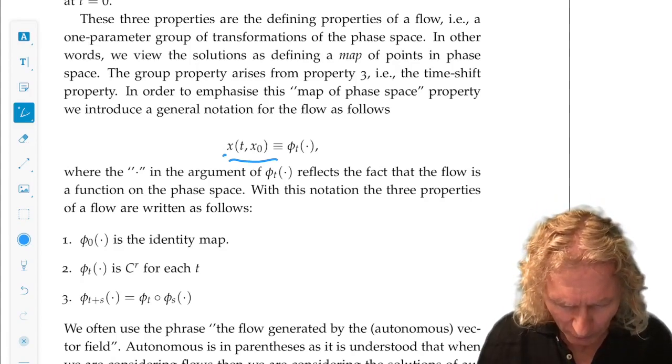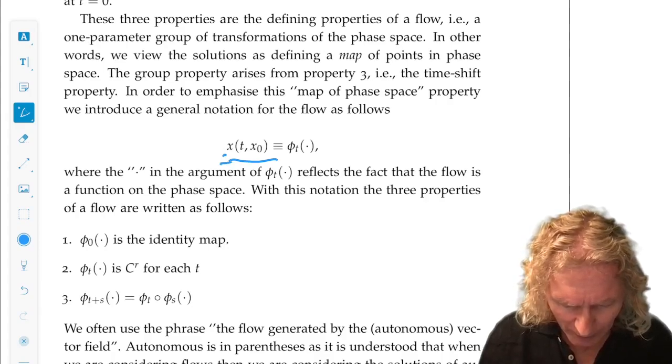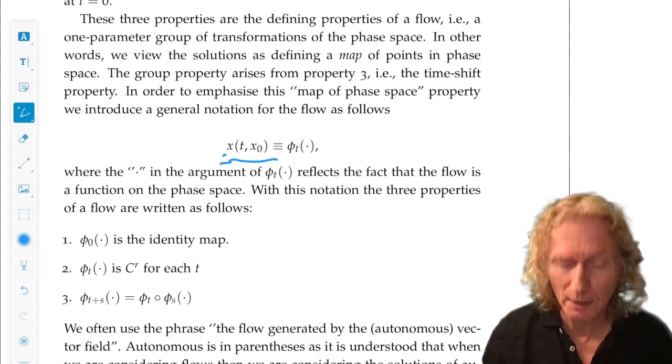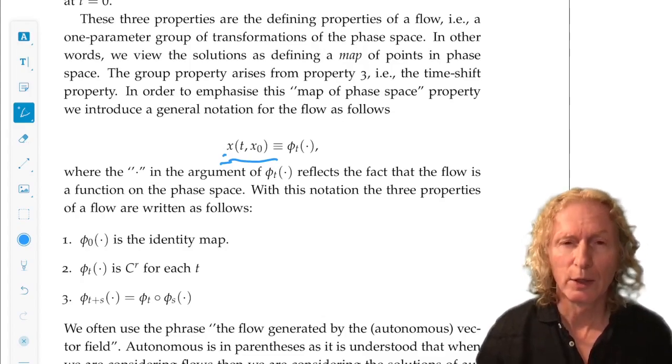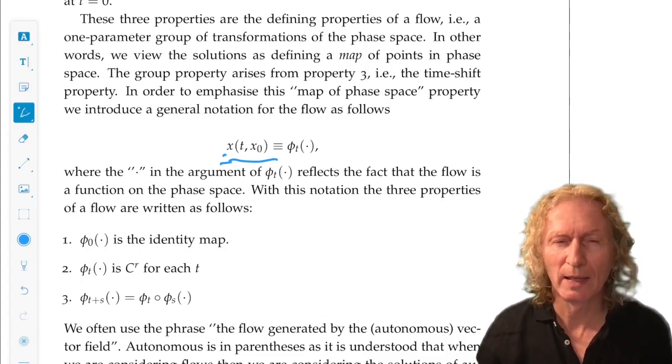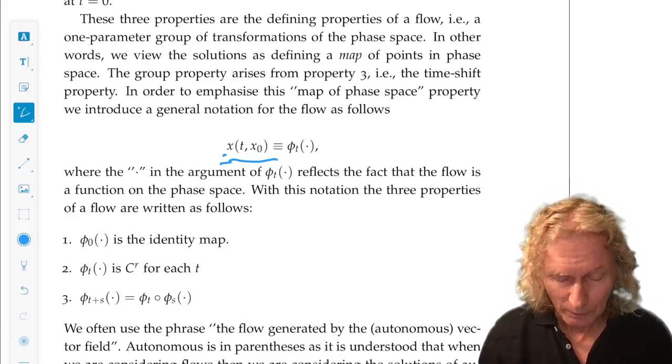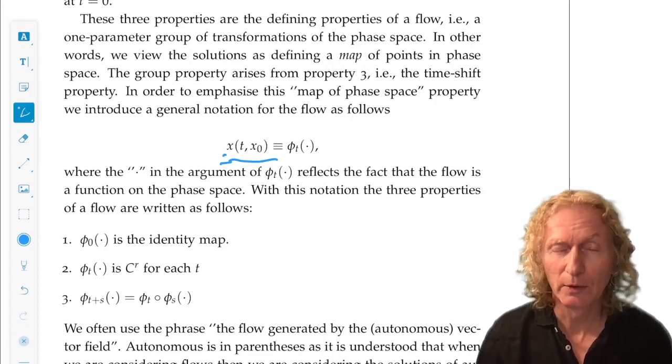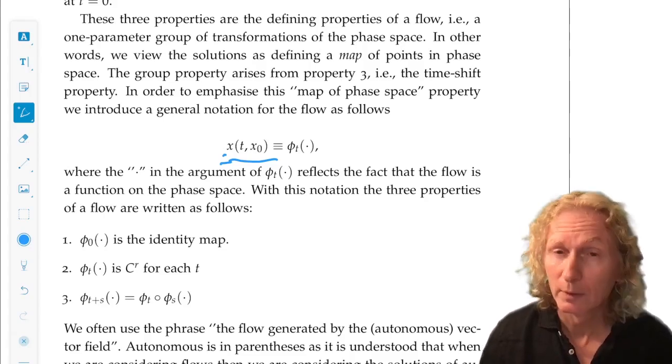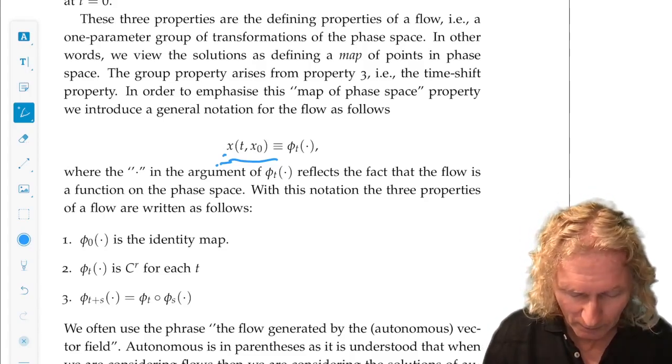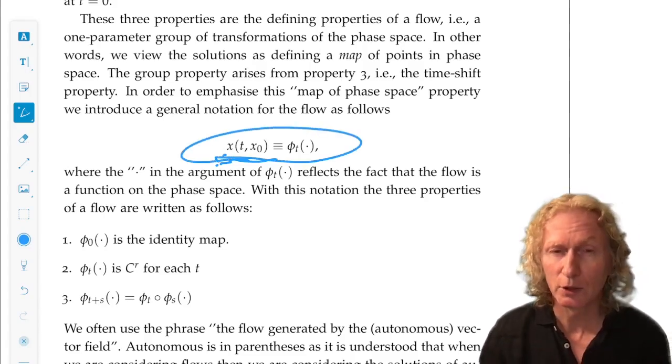So, we're going to write that solution that I've underlined on the left as phi sub t of the argument where we just put a dot. And that dot is a placeholder for x. It's a very slick notation. The subscript t is time. And this is the definition here.